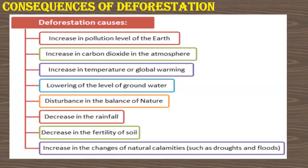Let's summarize the consequences of deforestation. These include: increase in pollution levels, increase in carbon dioxide in the atmosphere, increase in temperature or global warming, lowering of groundwater levels, disturbance in the balance of nature, decrease in rainfall, decrease in the fertility of soil, and an increase in the chances of natural calamities such as drought and floods.